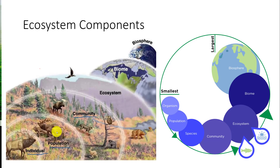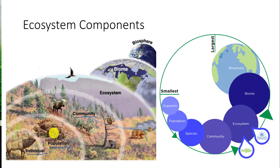Within communities, we have populations. They're generally considered to be of the same species — and don't think it's just animals. We have populations of different plant species too. Anything that is the same species interacts as a population. When we're looking at these ecosystem components, this population is all connected to each other, though there might be elk in another part of the ecosystem not part of this particular population or community.